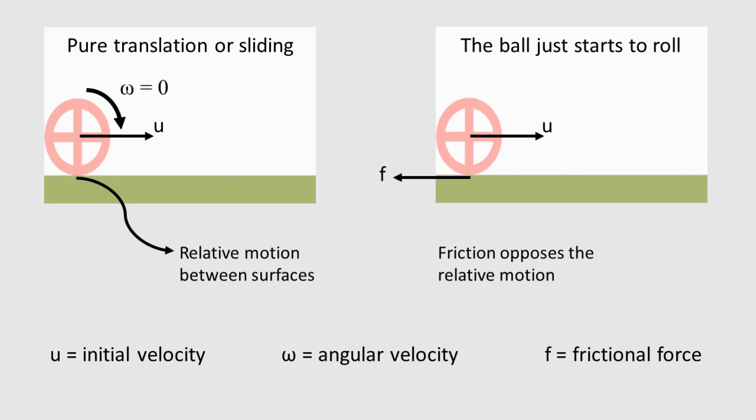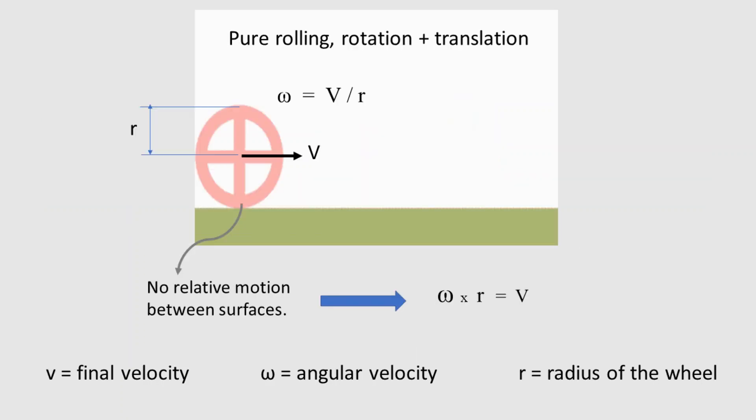When we push a ball, it starts off by sliding on the floor, giving rise to relative motion between the surfaces. And as always, friction tries to oppose this by providing a force in the opposite direction, which provides torque for the ball, thus resulting in its rotation. This frictional force also acts as an external force and slows down the velocity of the ball by Newton's second law of motion. The friction stops to act once the ball starts to purely roll.